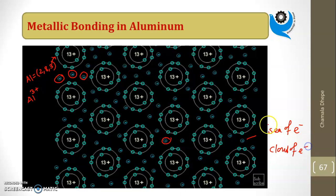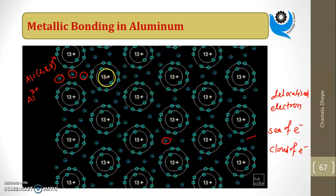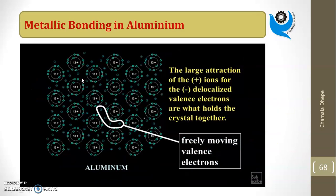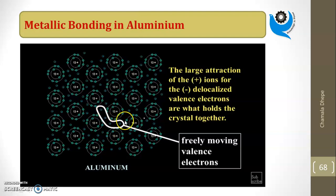These electrons are also called the cloud of electrons or delocalized electrons. They are delocalized because they are not fixed at one position — they can move anywhere in the sheet. Always remember: metallic bond is formed between the positively charged kernel and the negatively charged valence electrons. The large attraction of the positive ion for the delocalized valence electrons holds the crystal together — these freely moving valence electrons form the metallic bond and create the crystal of that metal.